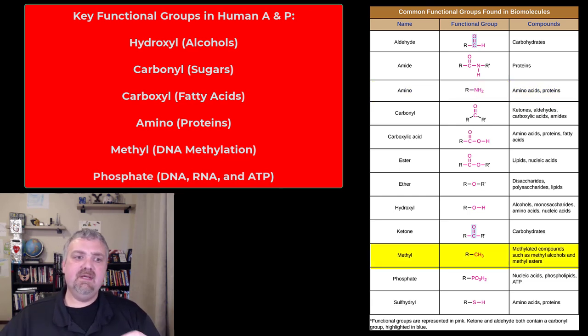All right, then we have the methyl group near the bottom there. So methyl group, DNA methylation is very, very important. Methyl groups are also important in amino acids. And then lastly, near the bottom, we have the phosphate group. That's very important for the sugar phosphate backbone of your nucleic acids, DNA and RNA, and also ATP. Our cellular energy source is adenosine triphosphate.